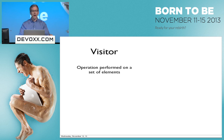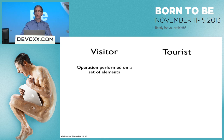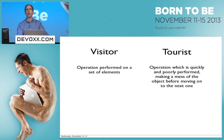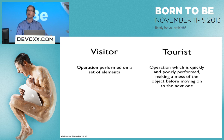We have the visitor pattern — this is an operation that's performed on each of a set of elements. Compared to that is the tourist pattern, which also visits all of these elements and makes a loud and complete mess of everything they visit before moving quickly onto a completely different element next door.